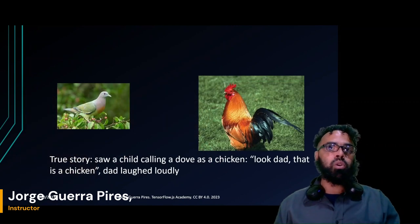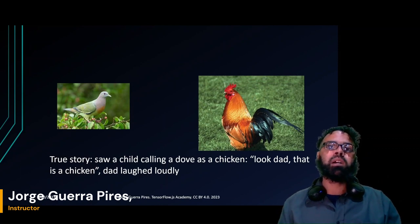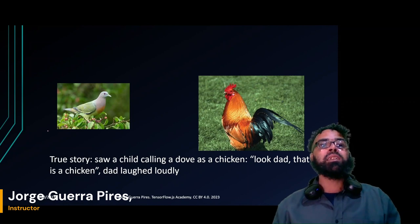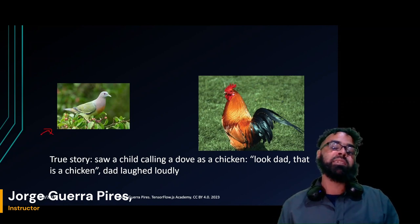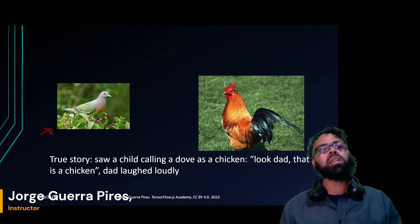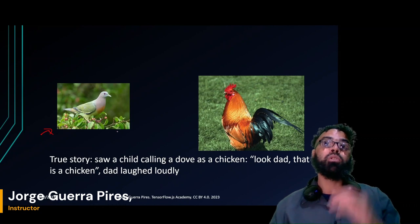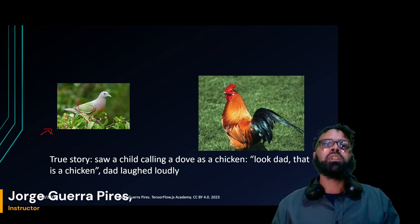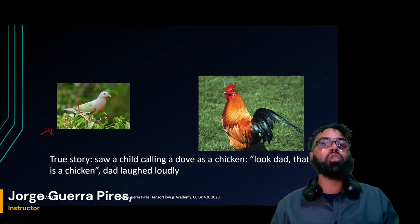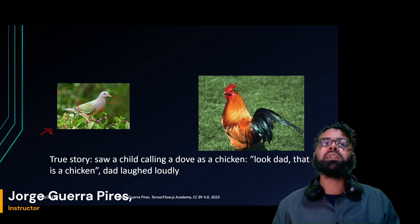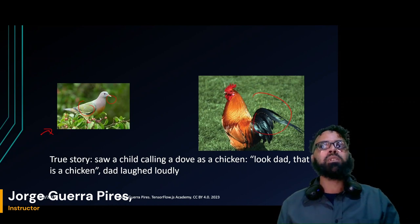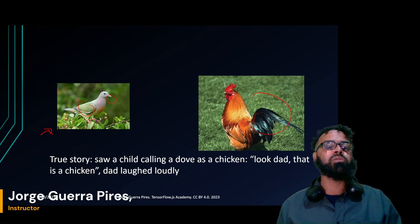One time I saw a child tell his dad, 'Look, that's a chicken!' — but it was a dove. The adult laughed a lot. I didn't laugh because, since I studied machine learning, I know machines make similar mistakes. The child made that mistake because he's still learning to build a feature extractor. A dove and a chicken do share many features: they fly, have wings, two legs, and a beak. The differences — the sounds they make, how they walk, whether they can fly — take time to learn.